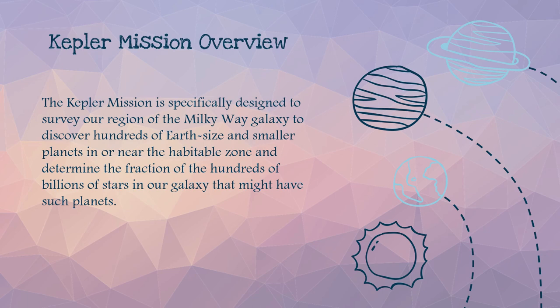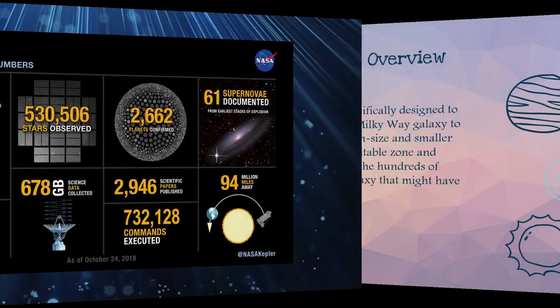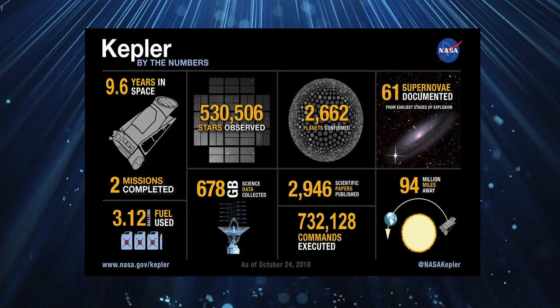Kepler's primary mission is to find Earth-sized exoplanets. The Kepler space telescope watches transits and measures the reduction in a star's light caused by a planet transiting in front of it. Kepler's sole scientific instrument is a photometer that continually monitored the brightness of approximately 150,000 main-sequence stars in a fixed field of view. This data is transmitted to Earth and analyzed to detect the periodic dimming caused by exoplanets crossing in front of their host star.